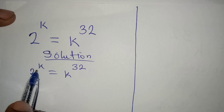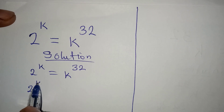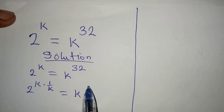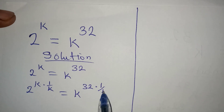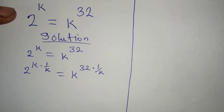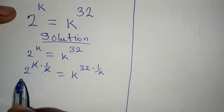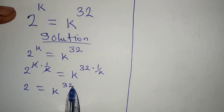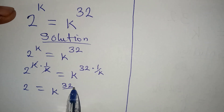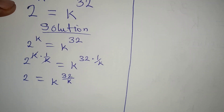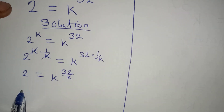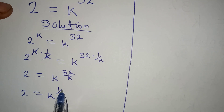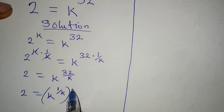The first step I will take is to eliminate k. So it's going to be 2 to the power of k multiplied by 1 over k, and that will be equal to k to the power of 32 multiplied by 1 over k. This k can cancel that k, and we get 2 to the power of k over k equals k to the power of 32 over k. Arranging this gives 2 equals k to the power of 1 over k, to the power of 32.